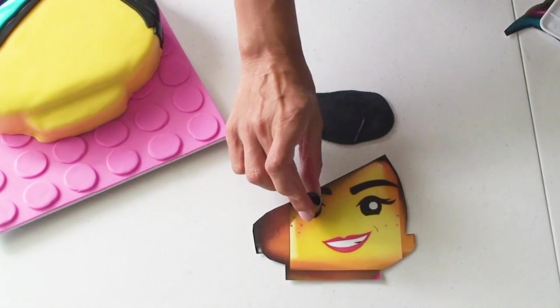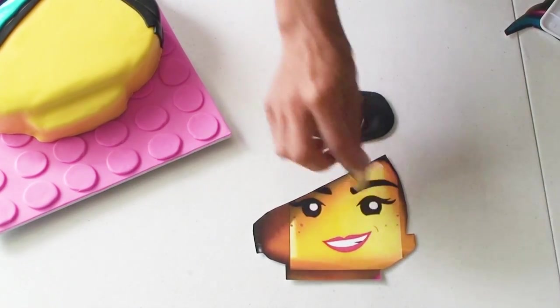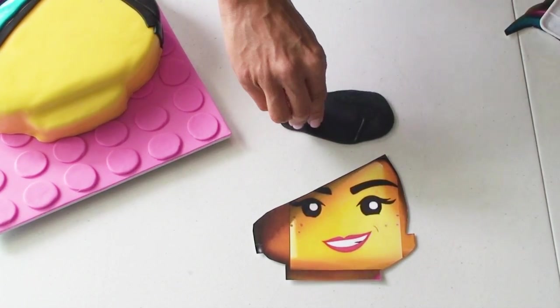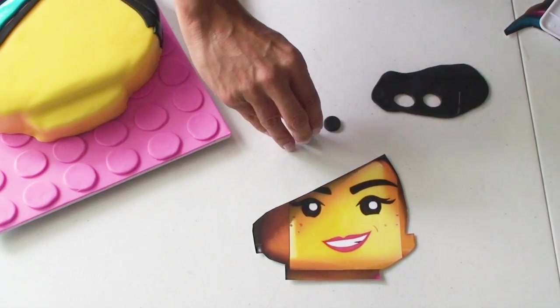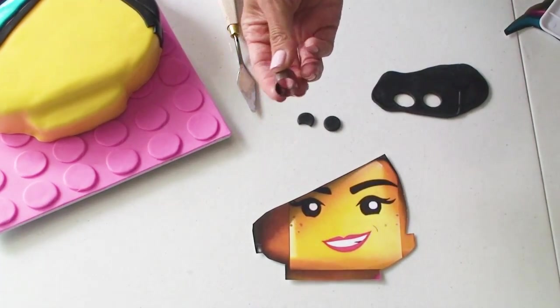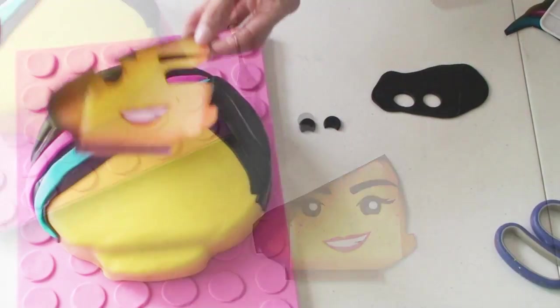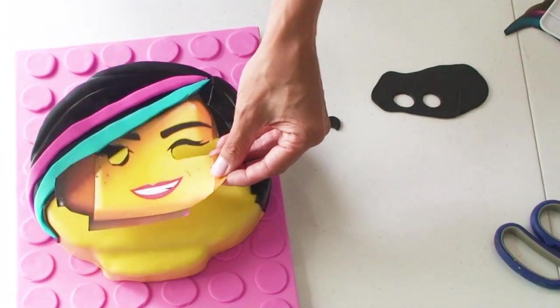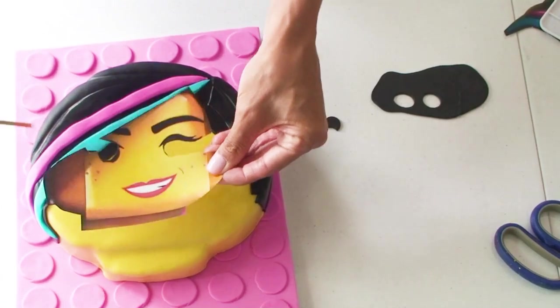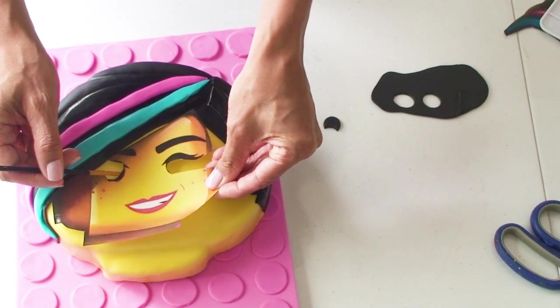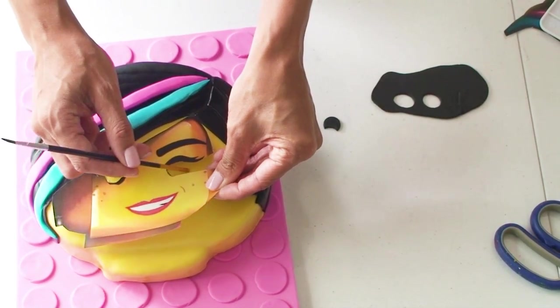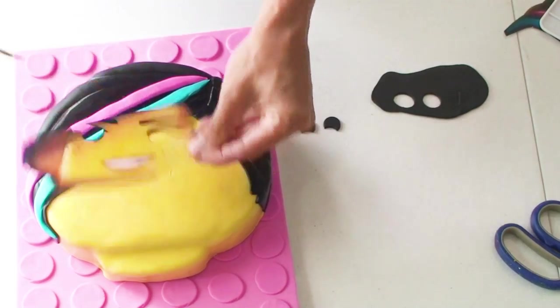To create her eyes, use the quarter inch cutter and cut two circles out of the fondant. To create the bottom of her eye, use the cutter to take off a little bit of the bottom round part of the eye. To position them on the cake in the right spot, cut the eyes out of the template and place it over the cake to make a mark using the back of the paintbrush.